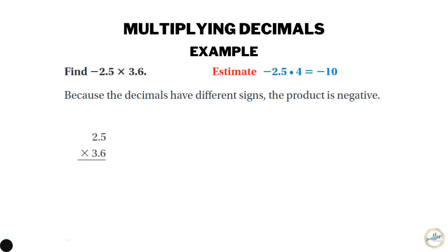We start by multiplying two and a half times 6. Six times five is 30, so we put a zero at the bottom and carry the three. Six times two is 12, and adding the carried three gives 15. Then we put a placeholder and multiply two and a half times 30.